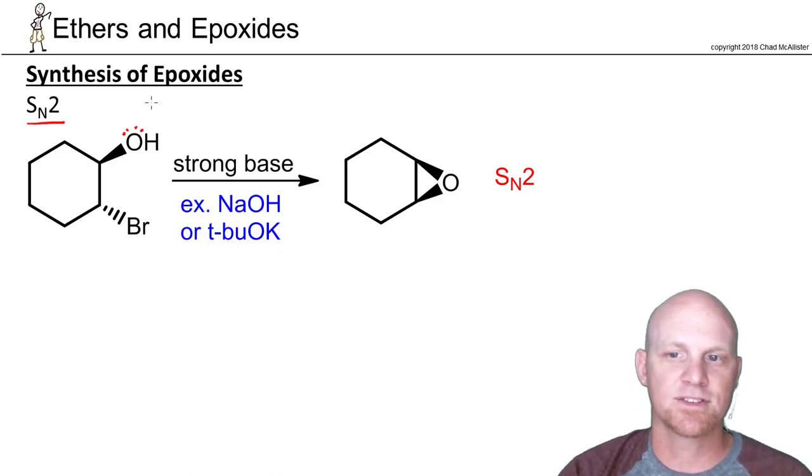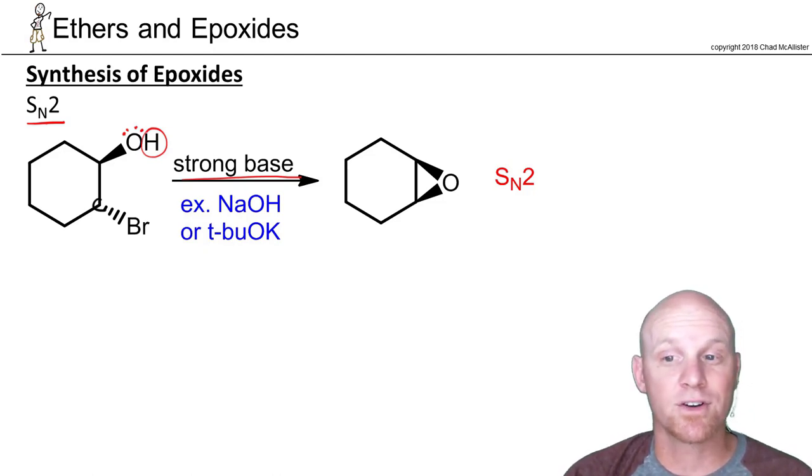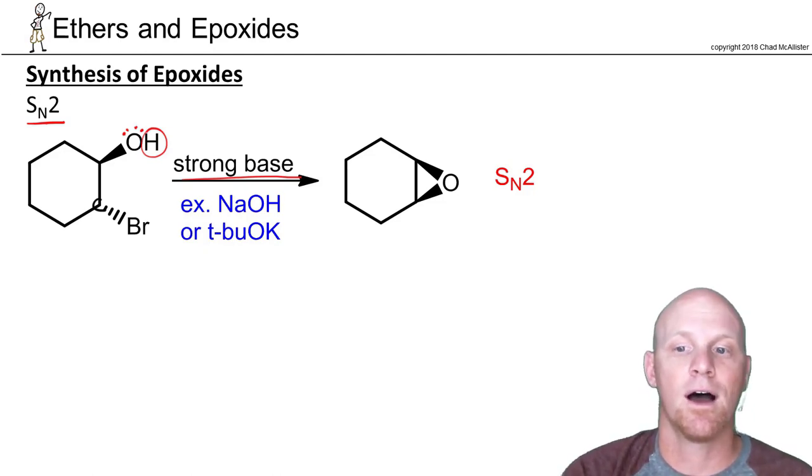And the idea is that this oxygen's going to need to get in position to do backside attack on this carbon with the leaving group right there. So first thing we're going to do is simply deprotonate this hydroxyl, and that's why we need a strong base. Either sodium hydroxide or potassium t-butoxide are pretty common. Technically we can get away with sodium hydride or sodium or lithium or potassium as well.